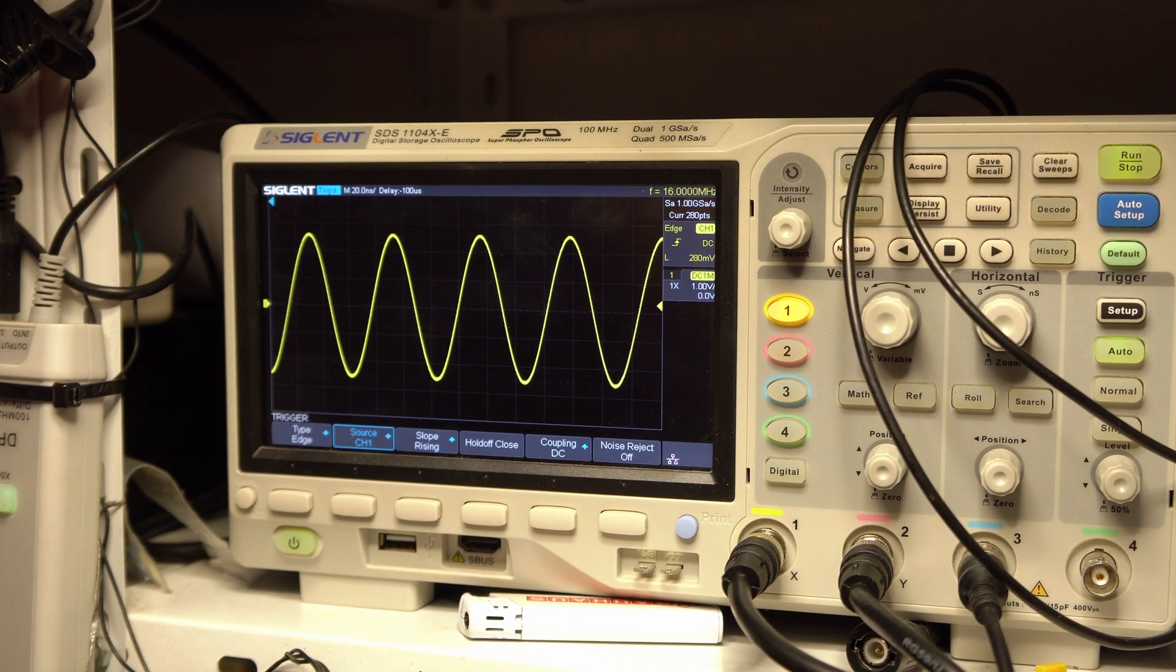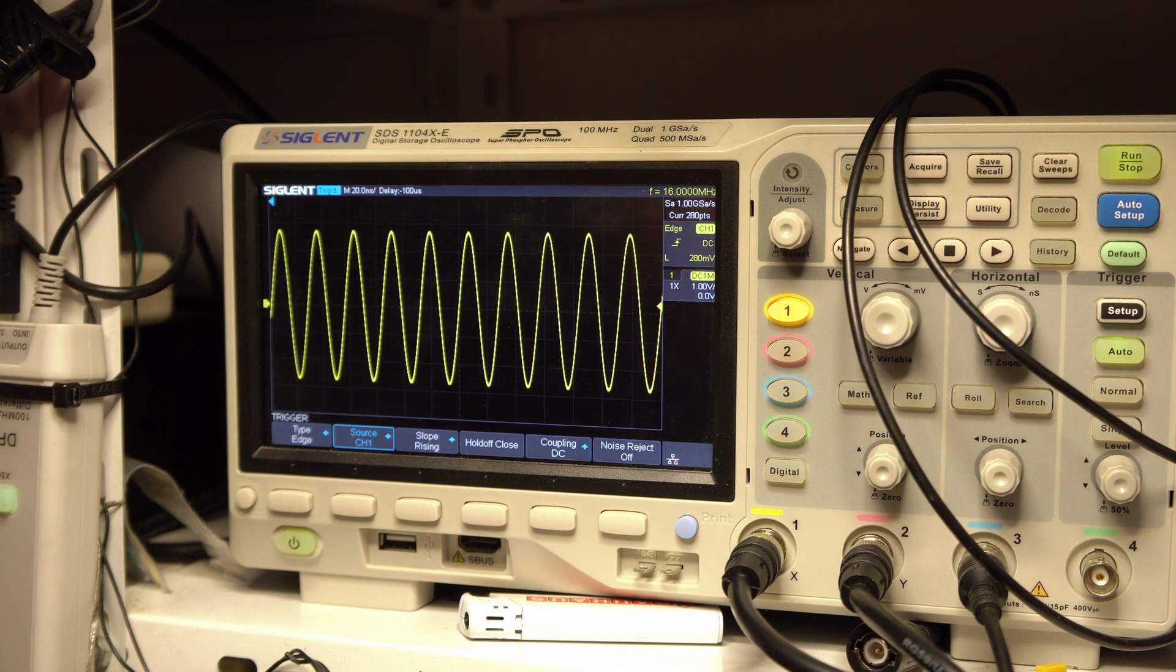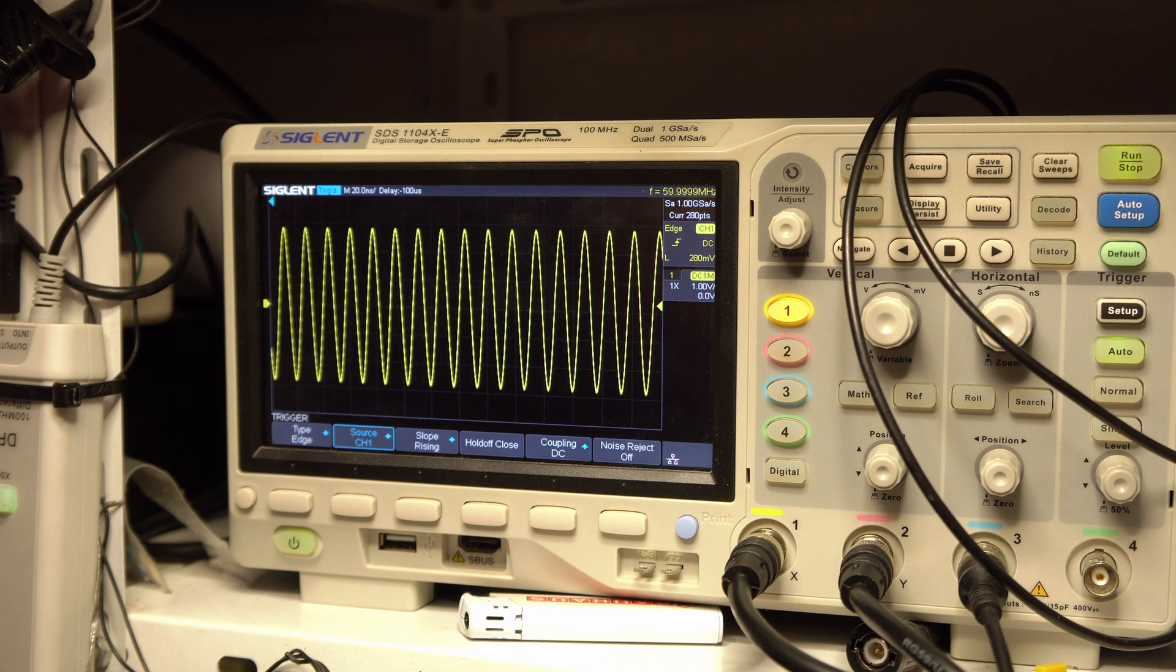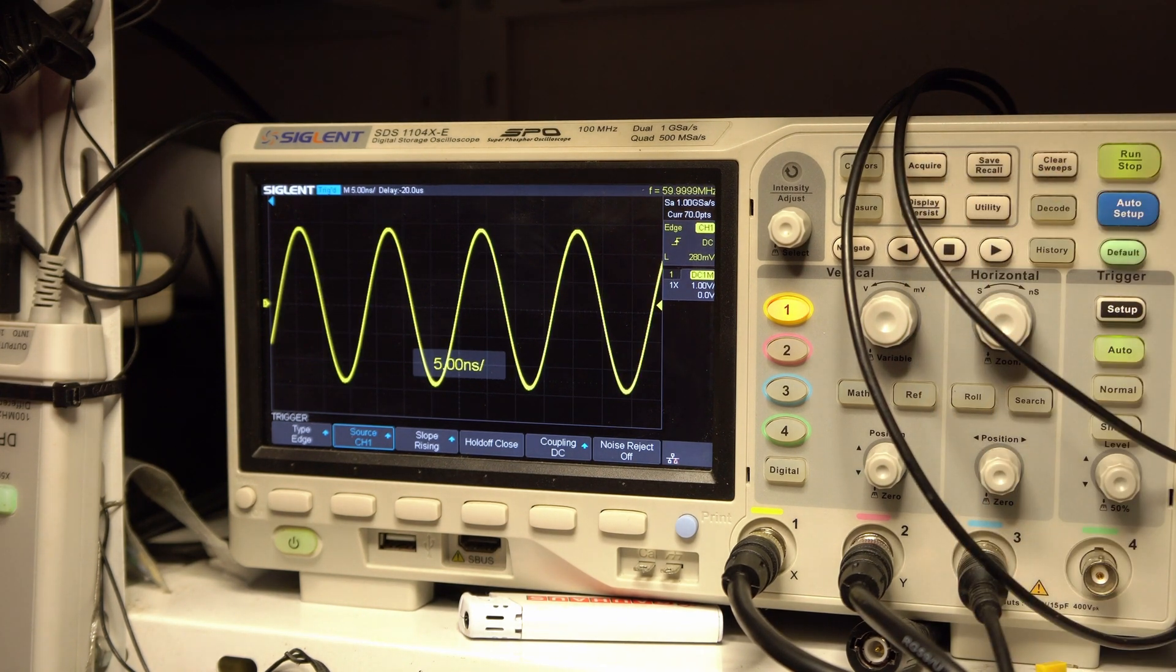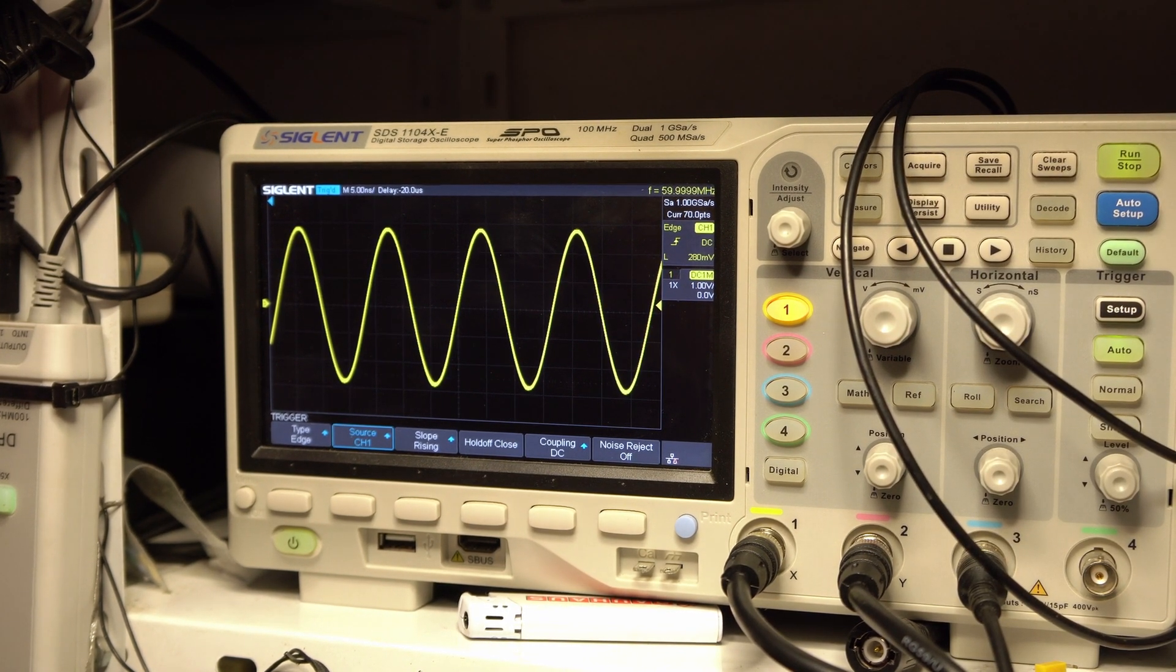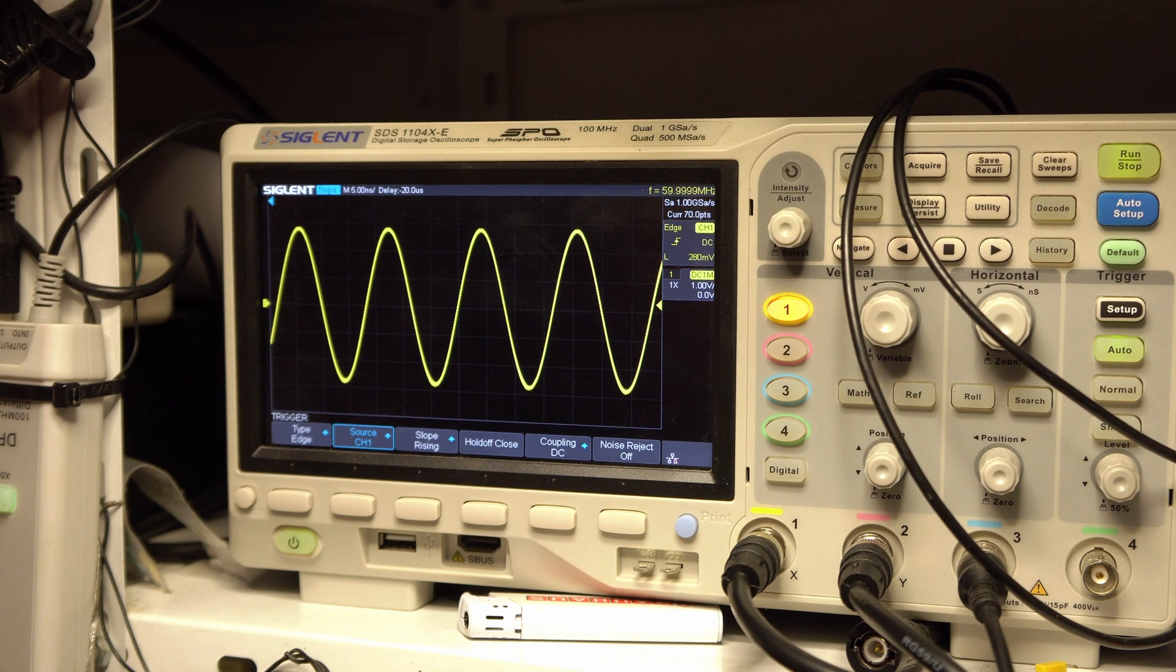Let's set it to 30 and there we go - clean 60 megahertz. We also can do a three cycle or four cycle to three or four times the output frequency we set.